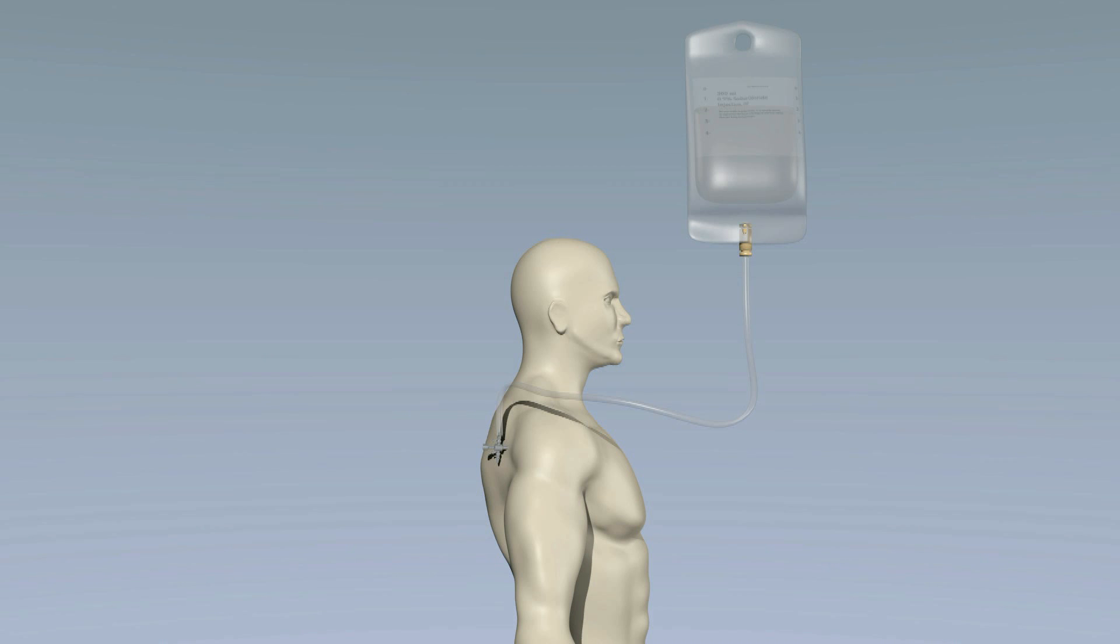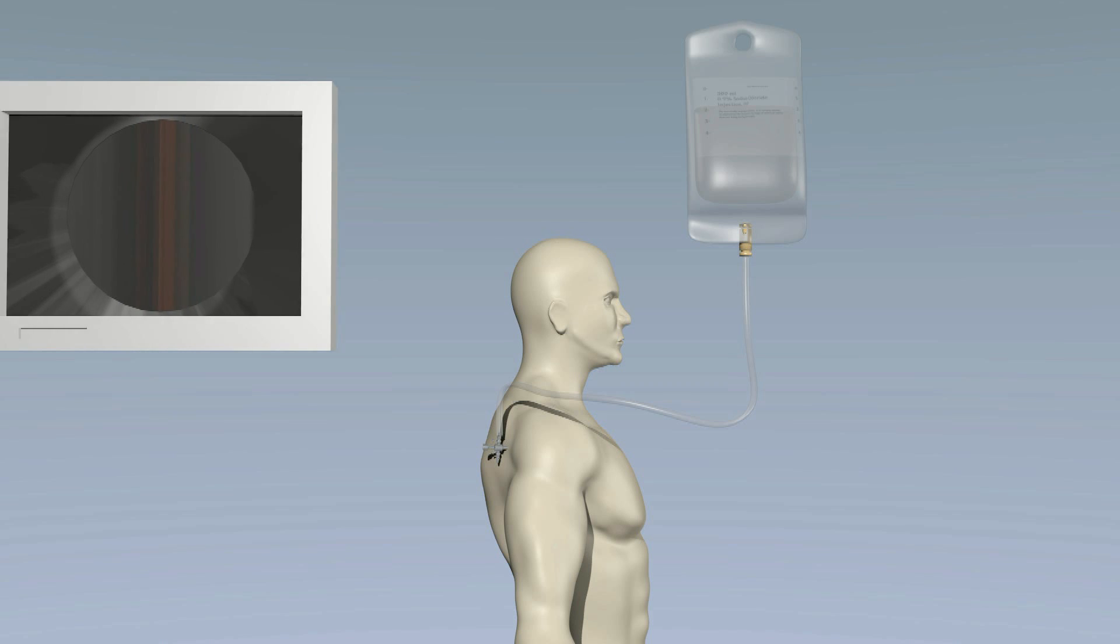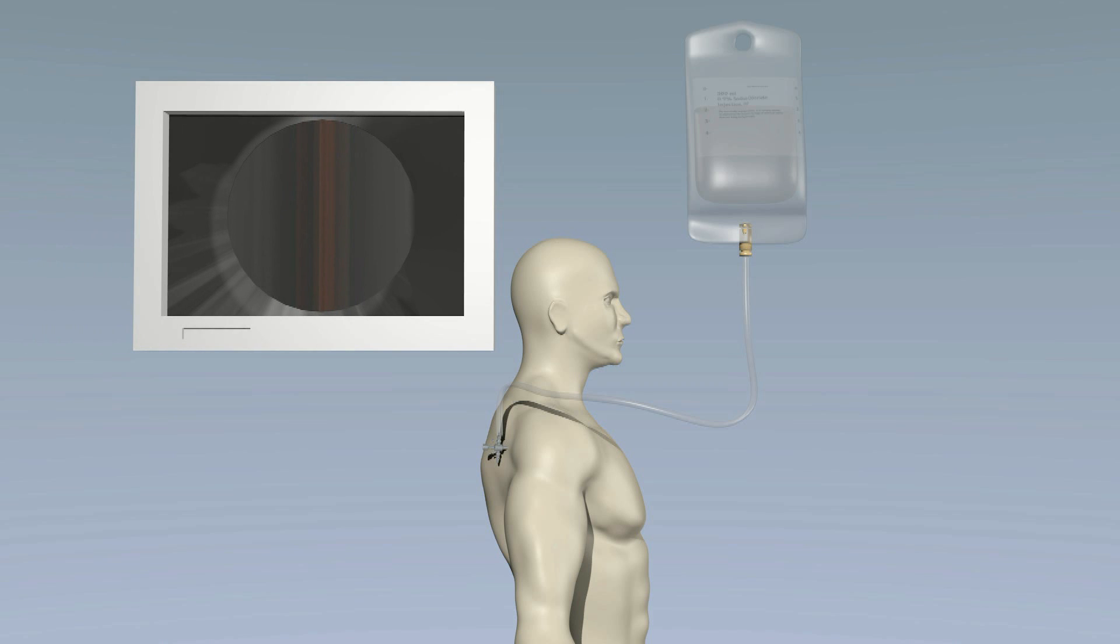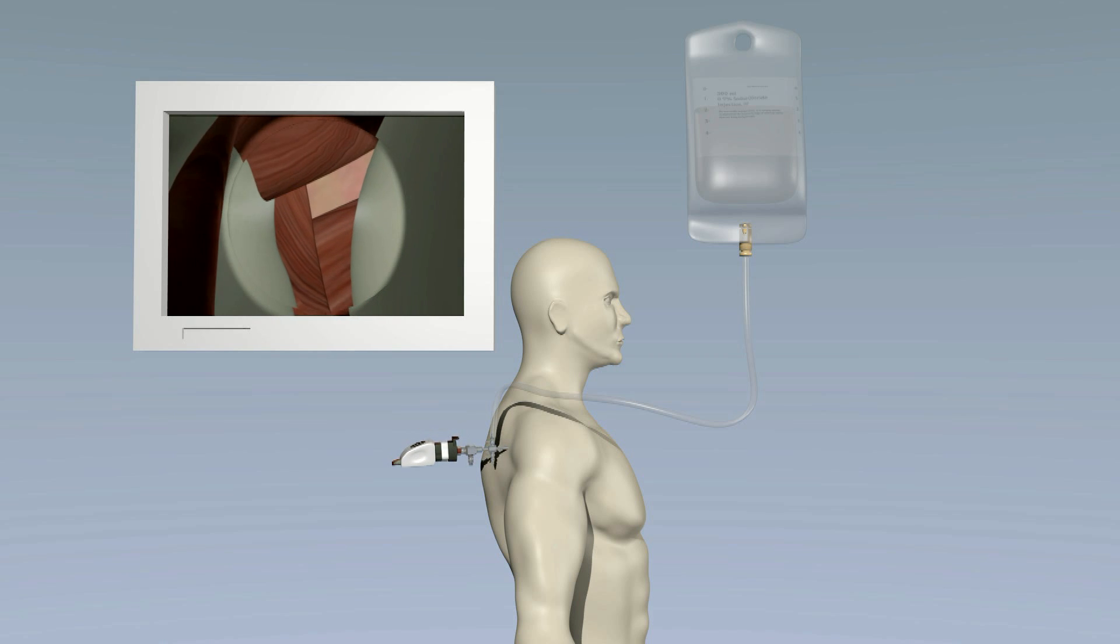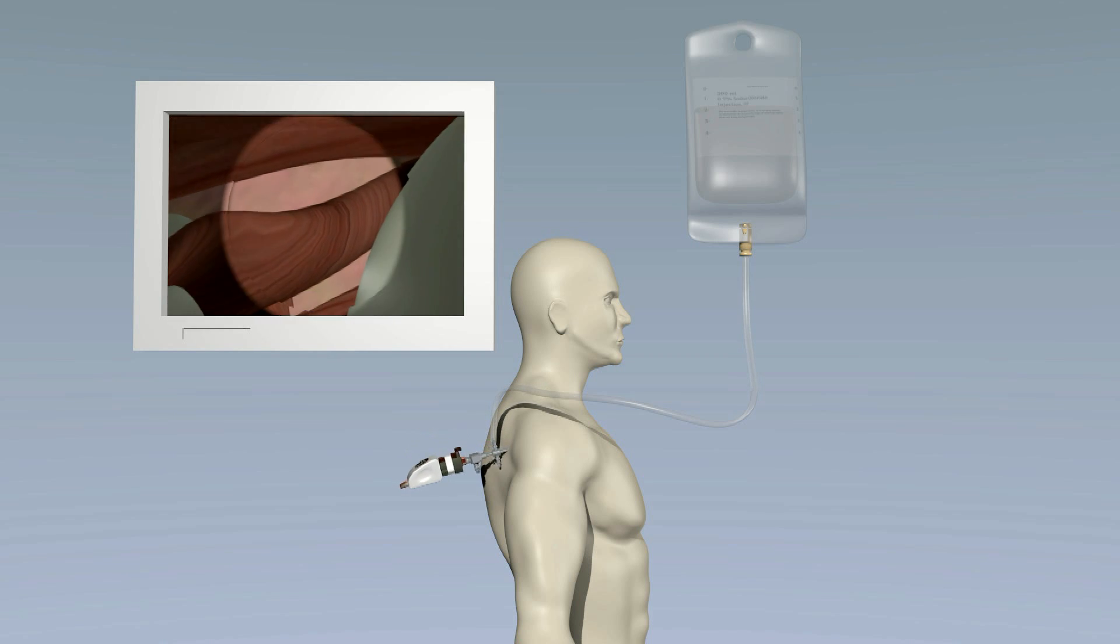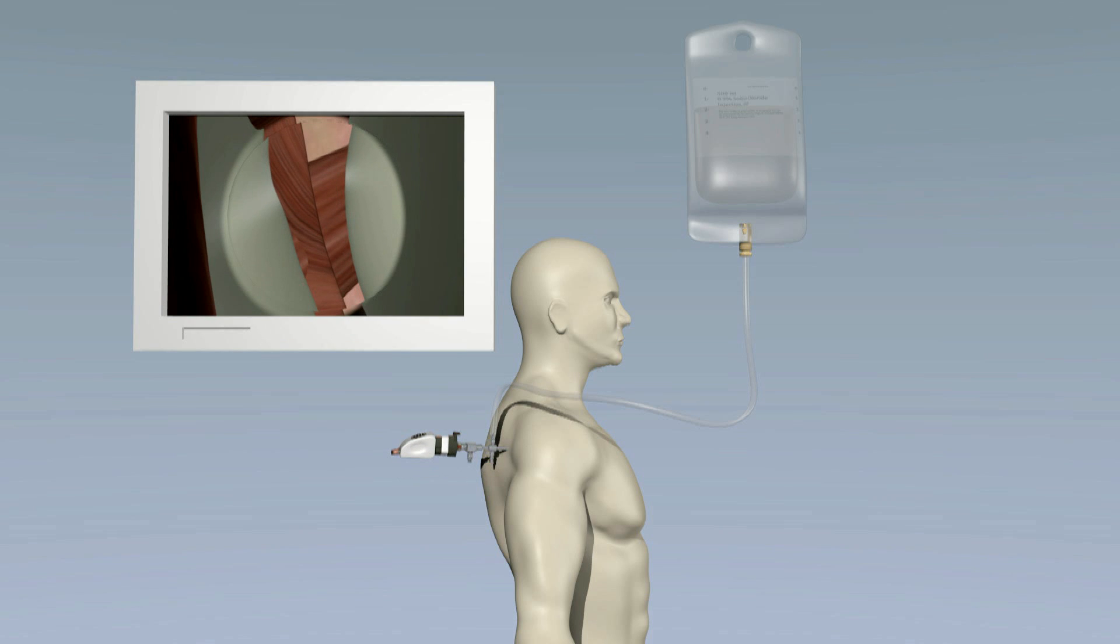This portal also allows for insertion of the camera. The camera is long and slender which makes it easy to fit through the portal. Fiber optic cables carry the signal from the camera to a monitor. The surgical team can then view the inside of the shoulder joint on the screen.